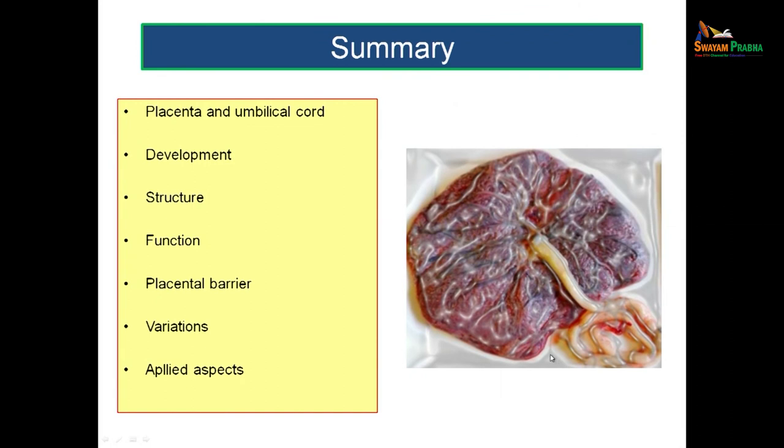To summarize, we have discussed the placenta — its structure, umbilical cord, formation, development of chorionic villi and its stages, structure in detail, functions, placental barrier, maturation to a term villus, variations in shape, umbilical cord attachment, degree of penetration, and applied aspects including placenta previa and hydatidiform mole. That is all about the topic placenta. Thank you.